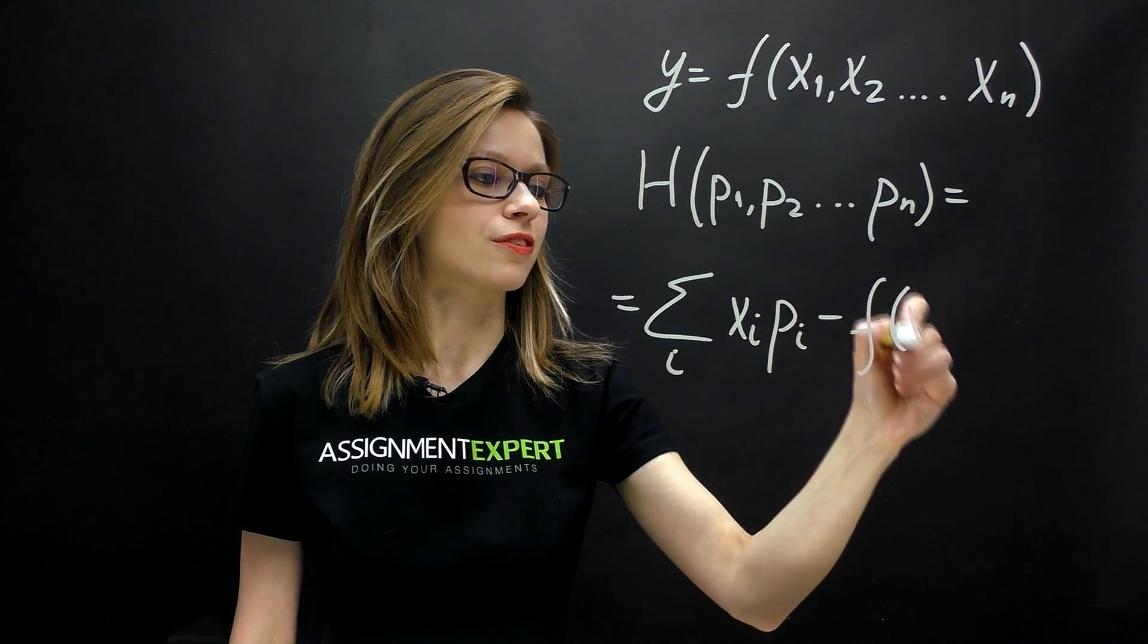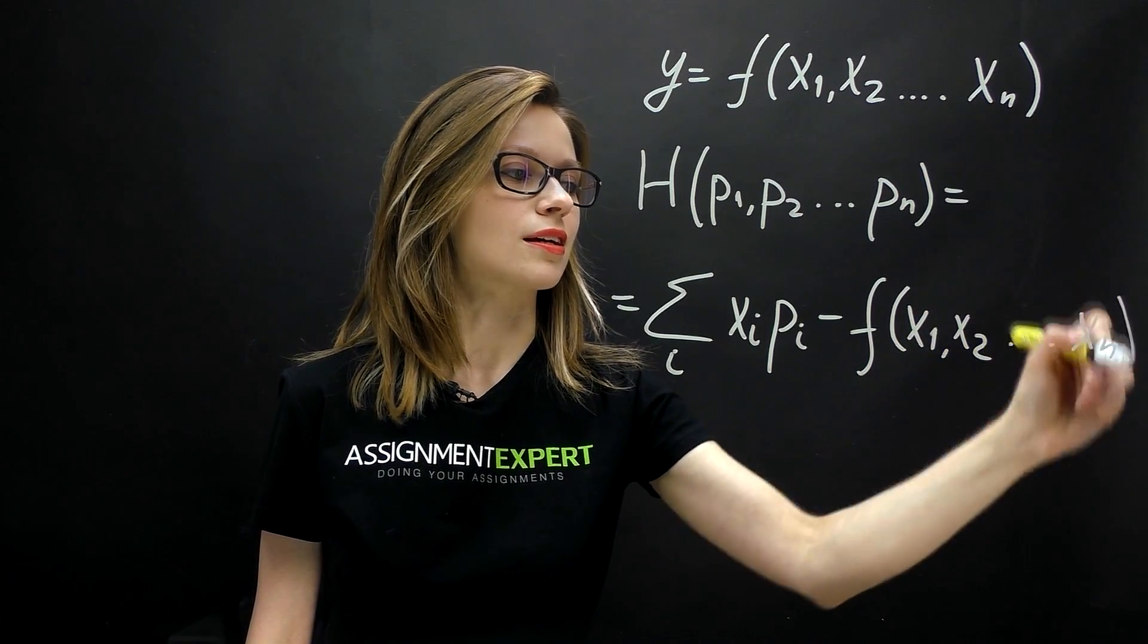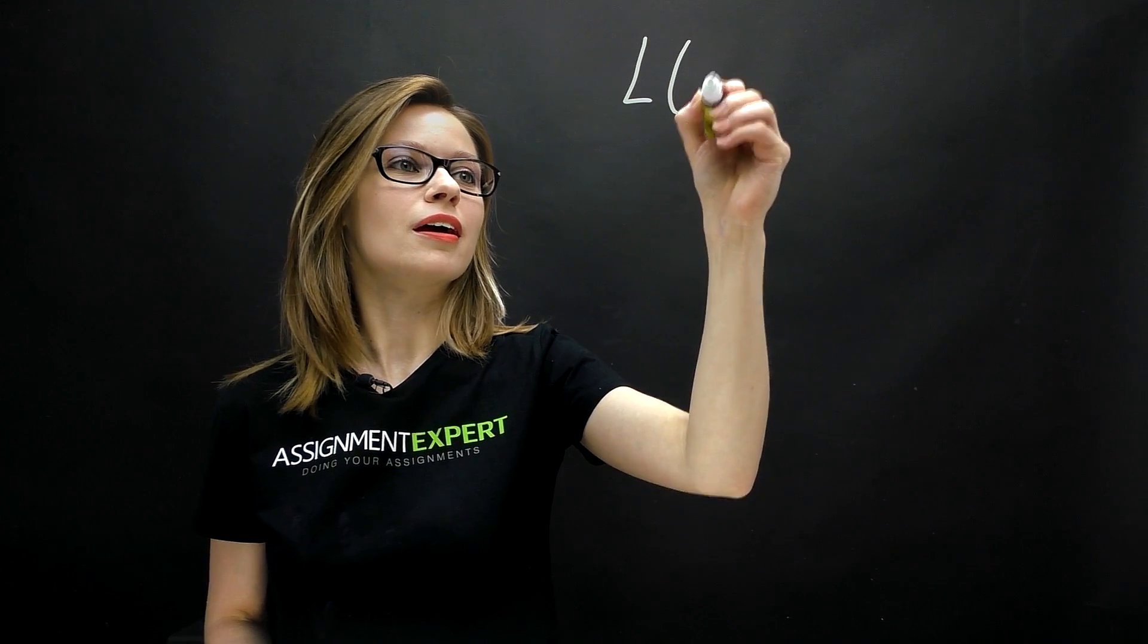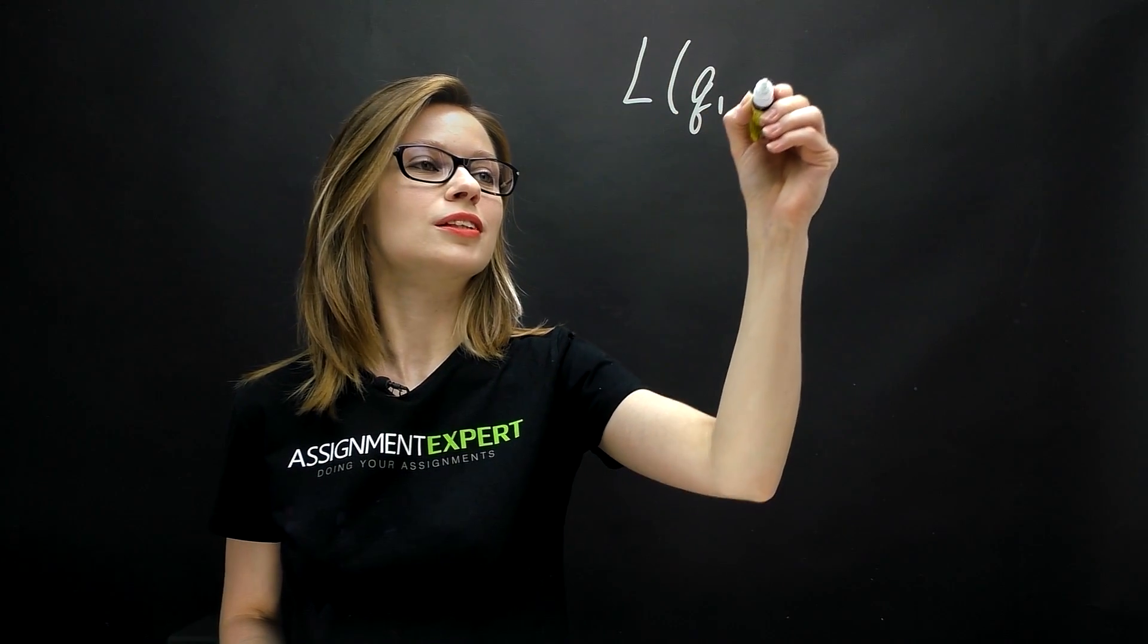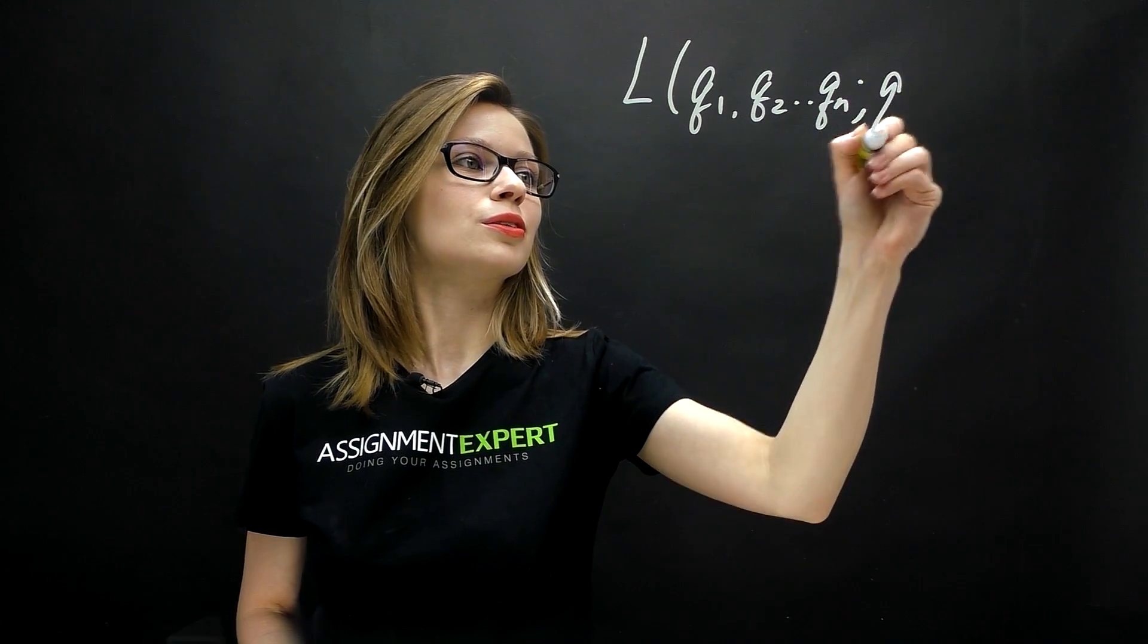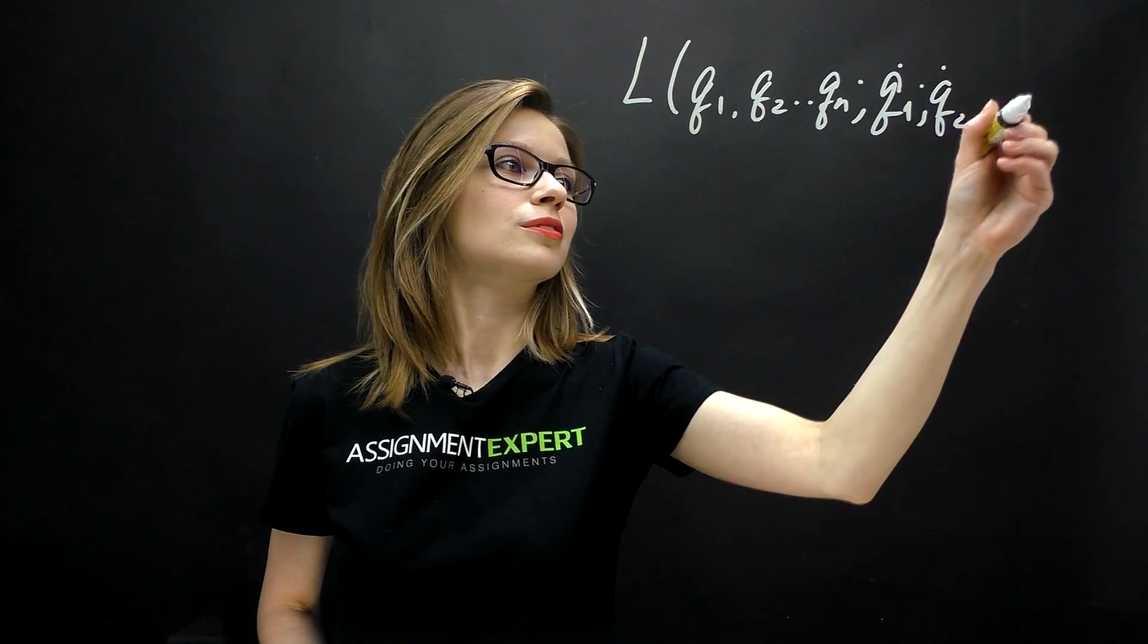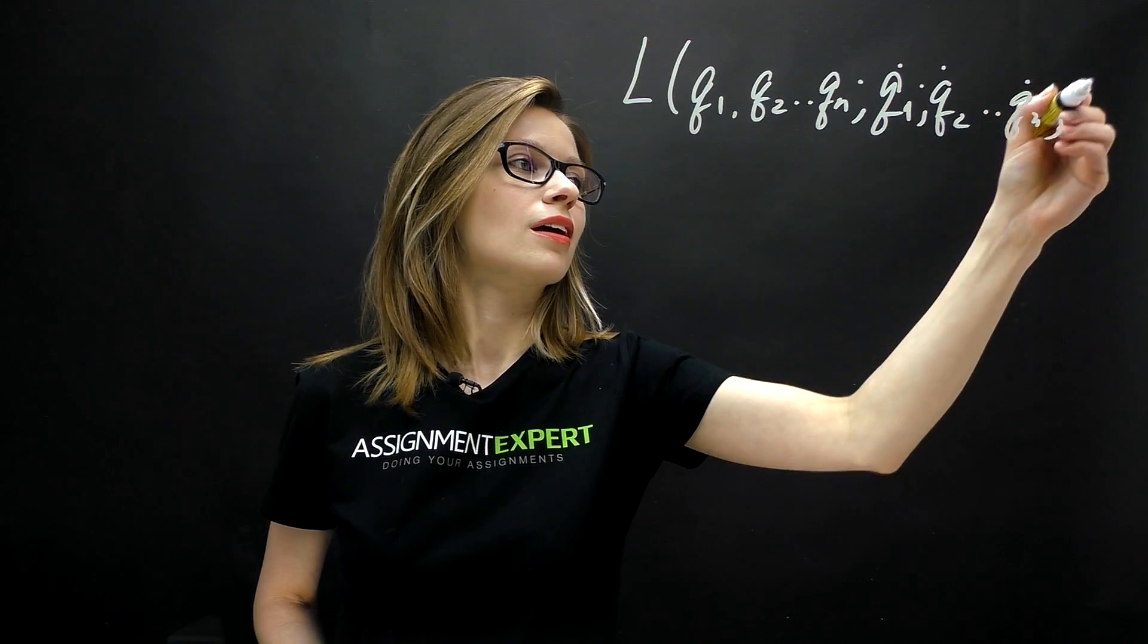In classical mechanics the Legendre transform provides connection between the Lagrangian and the Hamiltonian. The mechanical system is described by the Lagrange function or the Lagrangian L of q1, q2, qn, q̇1, q̇2, q̇n, and t.